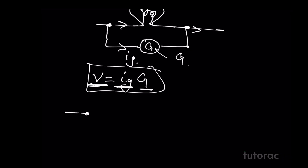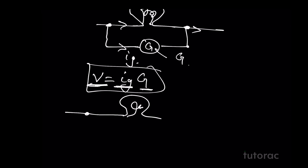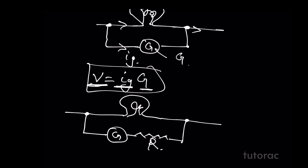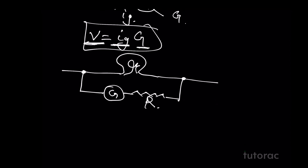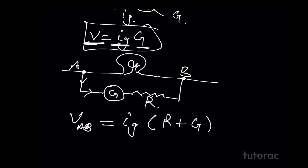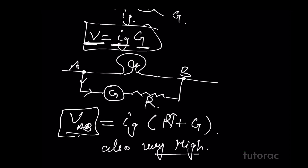To do so, similar to the ammeter idea, we connect the galvanometer in series with a very high resistance R across the circuit. To calculate the potential difference across points A and B, we can write VAB = IG × (R + G). Since R is very high, the net value of VAB that we are calculating is also very high.